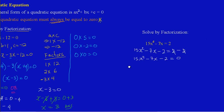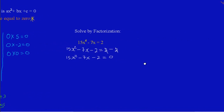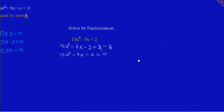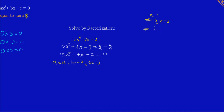Let's move over a bit because we're going to need a little space to work with. Now I'm going to find the product of a and c. I can list the values: a is equal to 15, b is equal to negative 7, and c is equal to negative 2. So a times c is 15 multiplied by negative 2, which gives me negative 30.